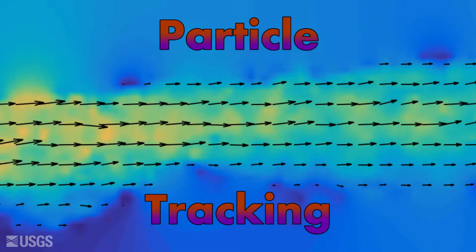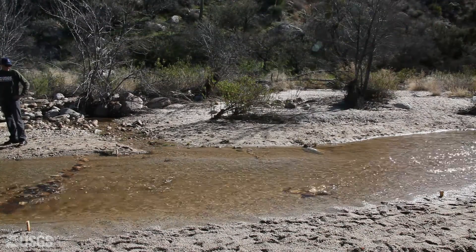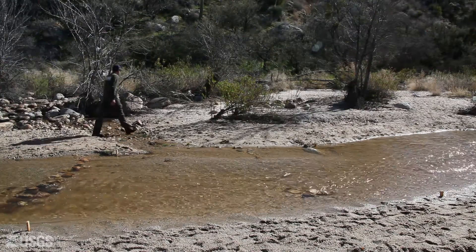My name is Claire Bunch. I'm a hydrologic technician in Tucson, Arizona with the U.S. Geological Survey, and today I'll be talking about particle tracking. Particle tracking is a method being developed to measure stream flow using a video camera. We set up a video camera at a USGS gauging station to record the water surface, process it with particle tracking software to get surface velocity, and if we know the geometry, we can use that to get a discharge.